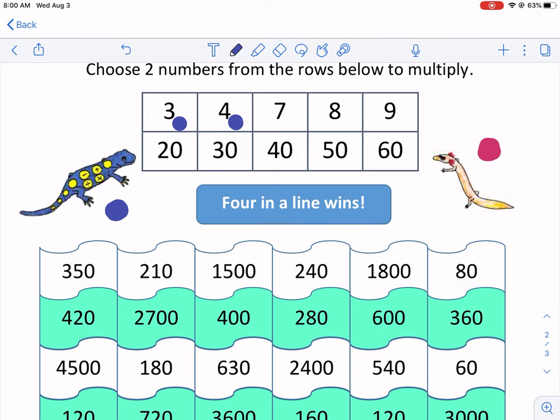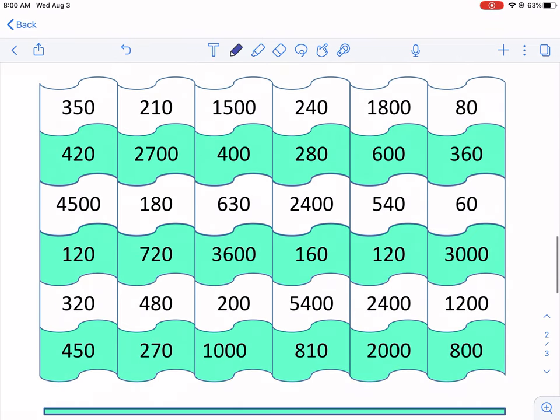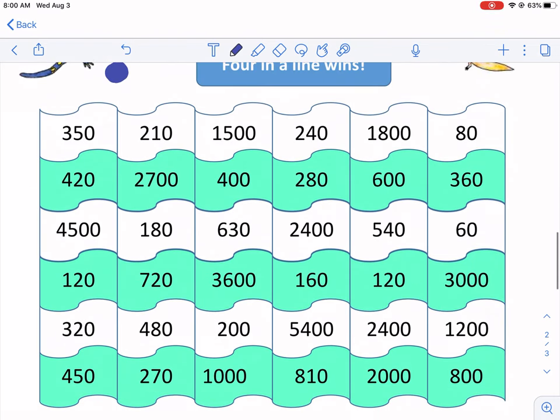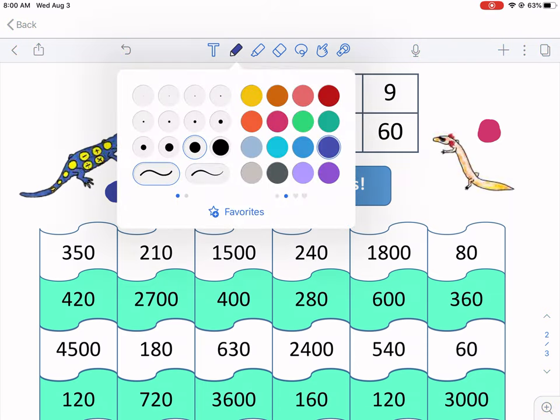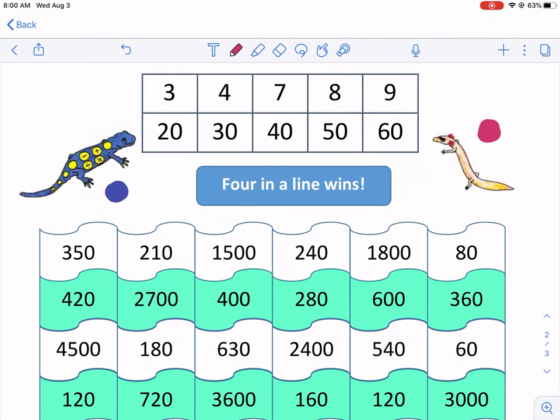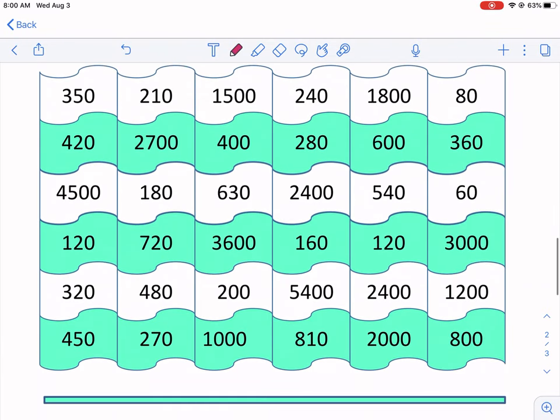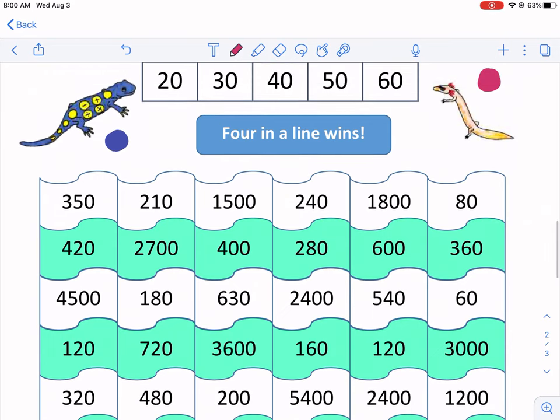For example, if I choose three times four, that's 12. 12 isn't even on here. So guess what? You basically just lost your turn and now it's going to be Sal's turn, red's turn, or pink, whatever color you want to call this, and he gets to choose. So he needs to be a little bit more careful with which numbers he chooses.